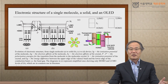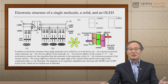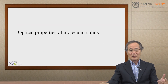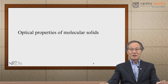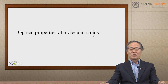OLEDs and many multilayer heterojunction devices have energy diagrams like this. This is a simple three-layer organic OLED energy band diagram. The transparent anode is on one side and the cathode on the other, with three organic layers in between. These are the HOMO levels and these are the LUMO levels. This is a brief introduction to the electronic structure of a molecular solid. Now let us move on to the optical properties of a molecular solid.